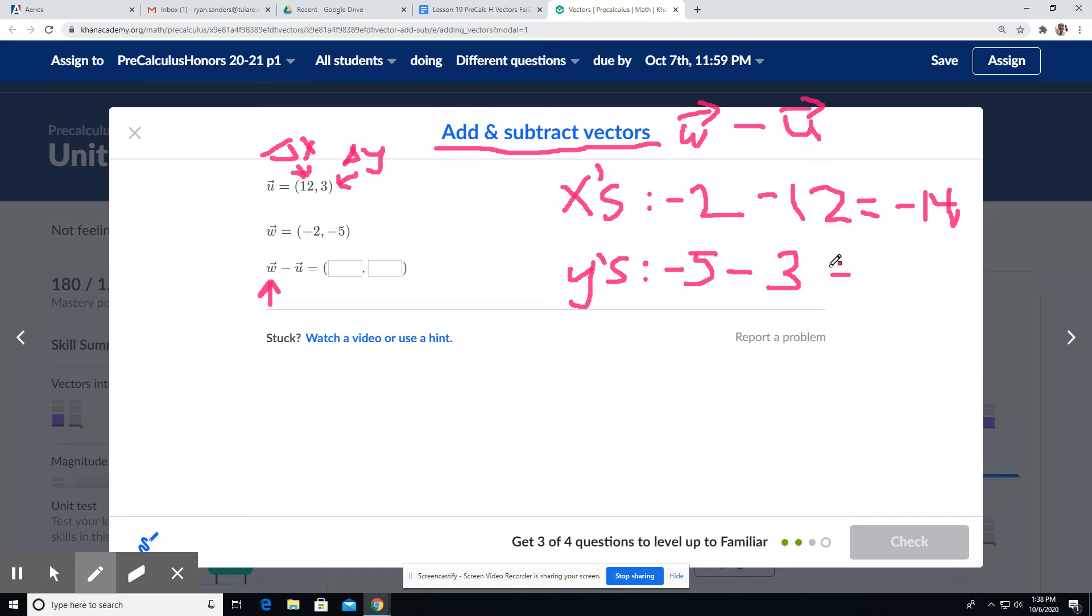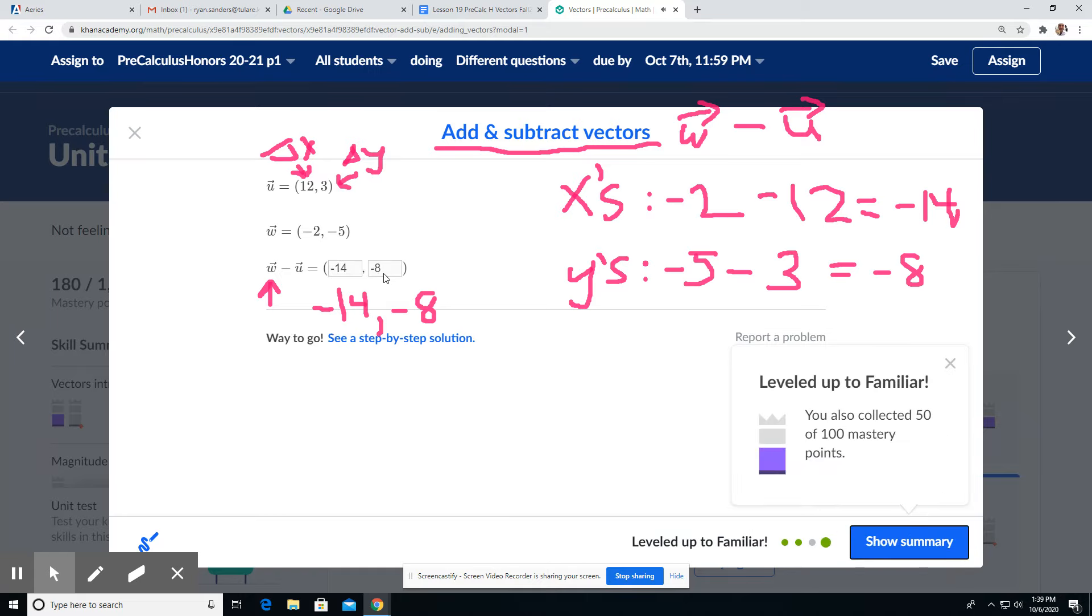Put these together, I get negative 8. So this answer turns into the vector that has a negative 14 for the X change, and a negative 8 for the Y change. Let's see how we did. Negative 14, negative 8. Got it.